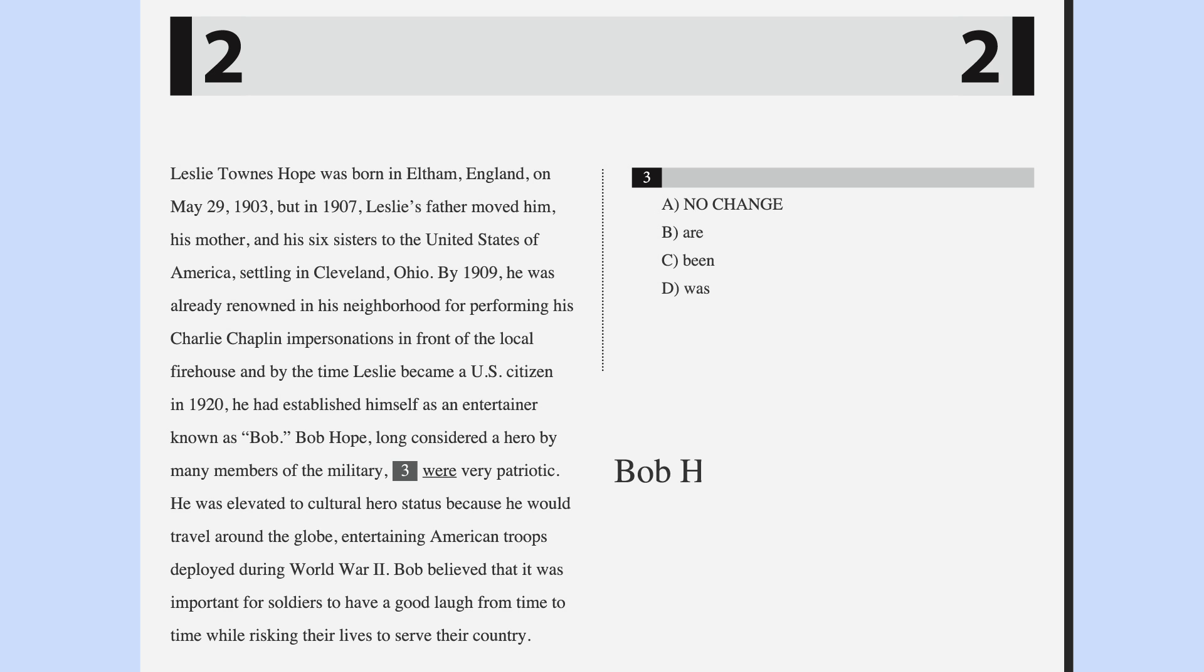As it's separated by commas, let's simplify this question by looking at the sentence without the modifier. Our sentence becomes, Bob Hope were very patriotic. Now we can easily identify our subject as Bob Hope. It also becomes very obvious that the verb were is incorrect. Our subject is singular, so the verb should be was. Answer choice D is the correct answer.